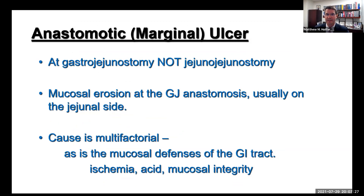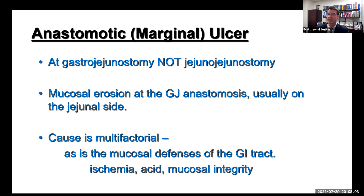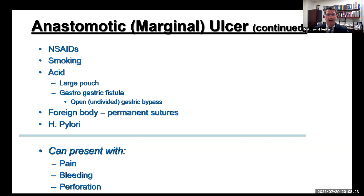Anastomotic or marginal ulcers occur at the gastro-jejunostomy; they're not really seen at the jejuno-jejunostomy. It's mucosal ulceration at the GJ anastomosis, usually on the jejunal side. When doing scopes, people sometimes look around the pouch and don't see any ulcer—you need to go just past the anastomosis and look on the small bowel side. Have a high index of suspicion; make sure you look across the anastomosis, especially if there is a stomal stenosis. The cause is multifactorial: ischemia, acid, and mucosal integrity all play a role.